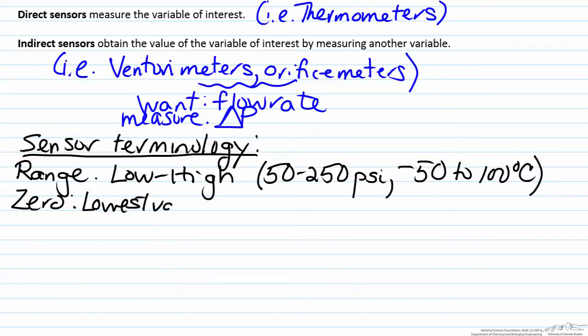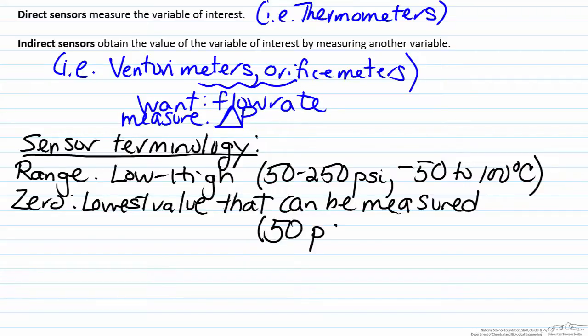Another value of interest is the zero. The zero represents the lowest value that can be measured by the sensor, so in some cases particularly measuring flow the zero will be zero, but in many other situations the zero of the sensor will in fact not be zero. If I look at the two examples that I provided above with the pressure range and the temperature range, the zero is 50 psi for the pressure sensor and negative 50 degrees Celsius for the temperature sensor.